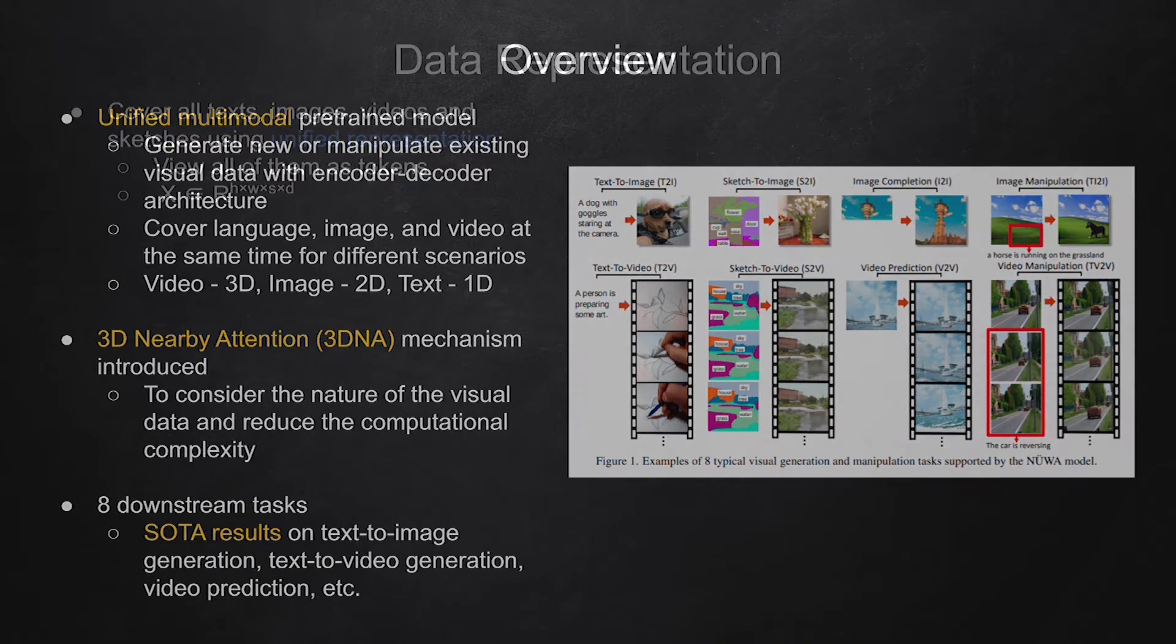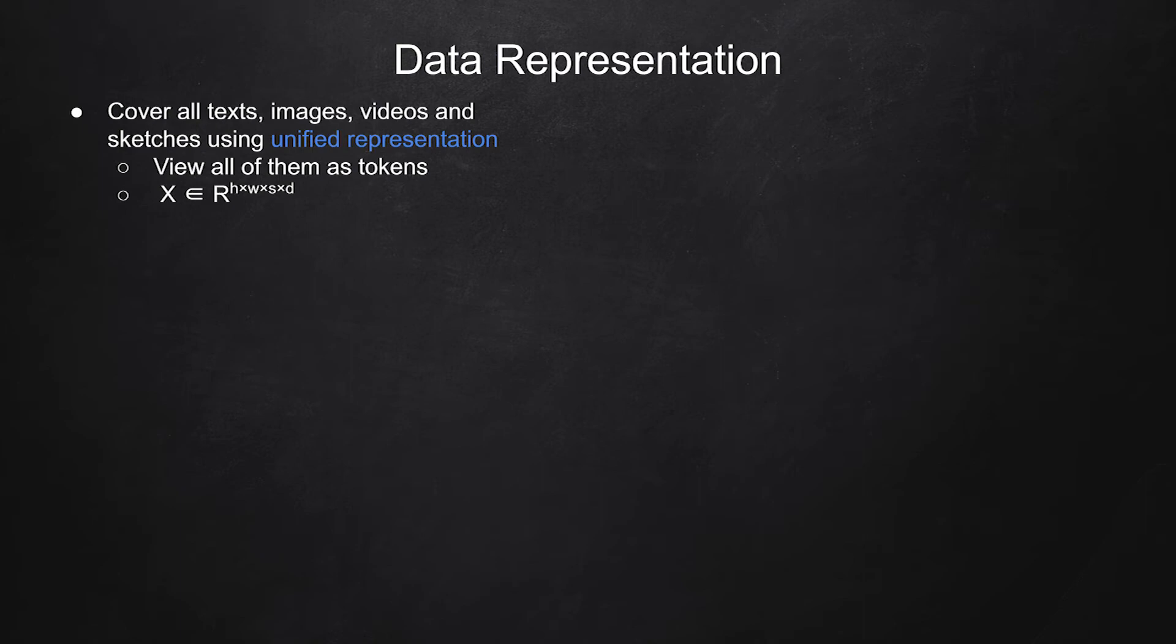The proposed NEWA model handles instances like texts, images, videos, and sketches as a unified representation. They use representation X of shape H by W by S by D, where H and W are height and width in spatial axes, S denotes the number of tokens in the temporal axis, and D is the dimension of each token.